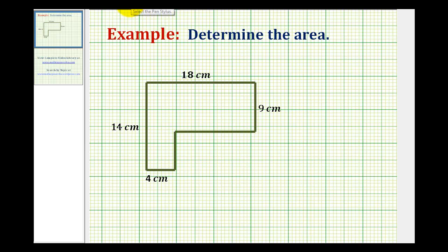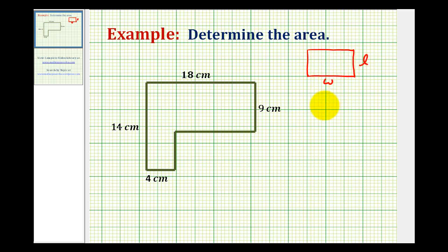We want to determine the area of the given L-shaped polygon. To do this, we'll be using the area formula for a rectangle. If this is our rectangle, and we call this the length and this the width, the area would be equal to length times width.